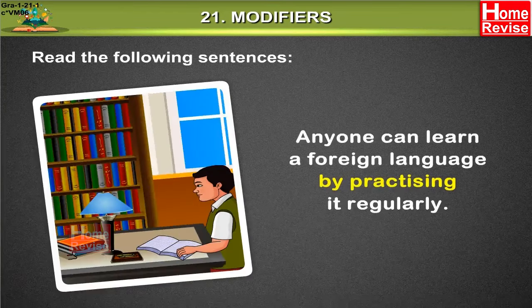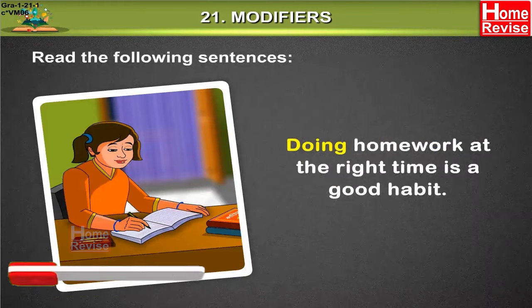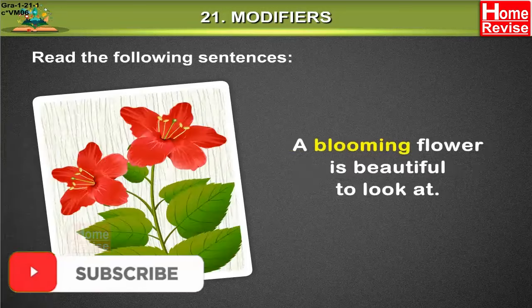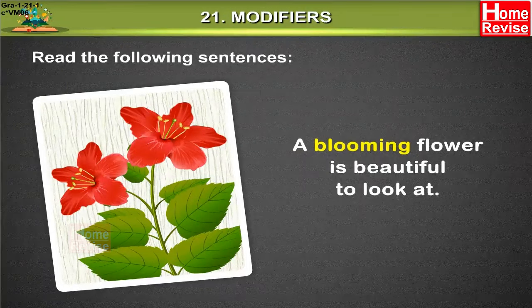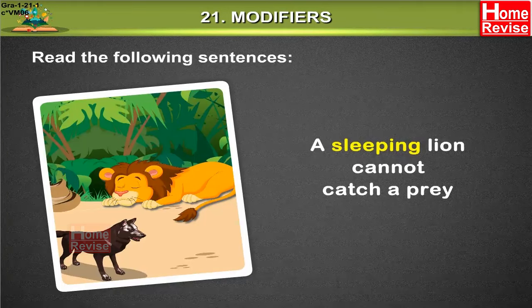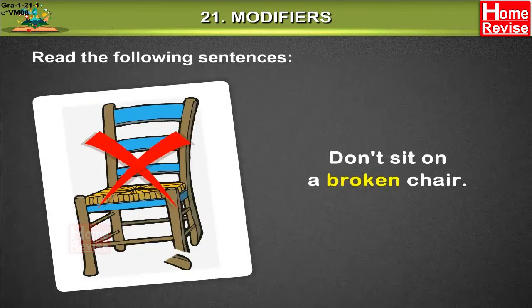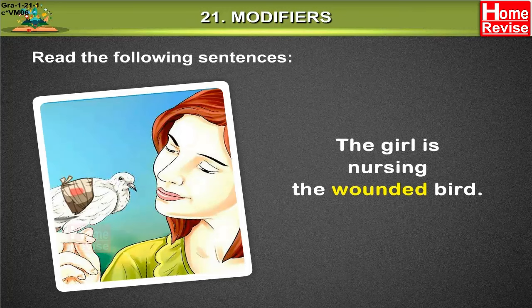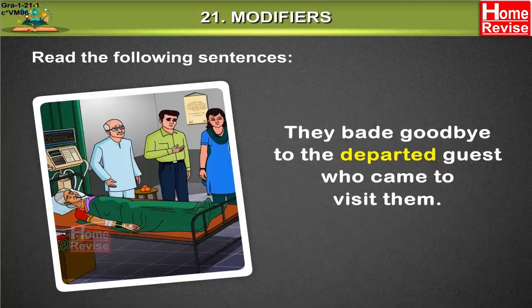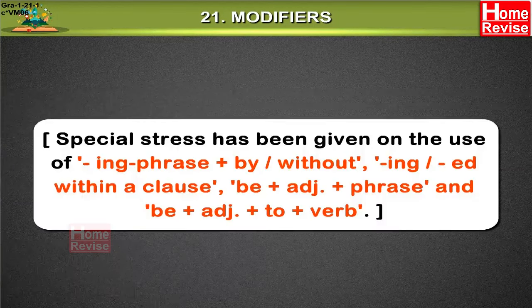Modifiers. Read the following sentences: Anyone can learn a foreign language by practicing it regularly. Without doing any physical exercise, you cannot keep good health. Doing homework at the right time is a good habit. A blooming flower is beautiful to look at. A growing child needs nutritious food. A sleeping lion cannot catch a prey. Don't put your hand in boiling water. Don't sit on a broken chair. The girl is nursing the wounded bird. They made goodbye to the departed guest who came to visit them. We saw the men looking out hopelessly.